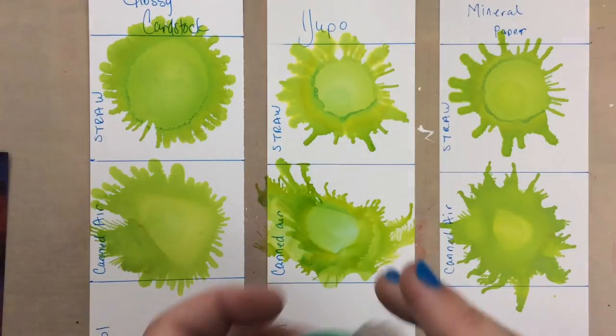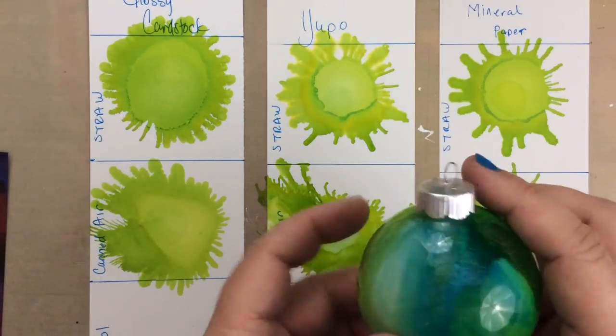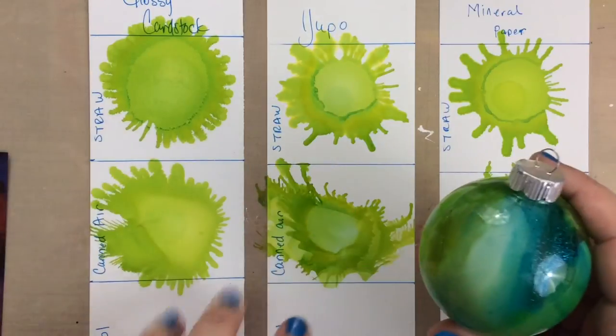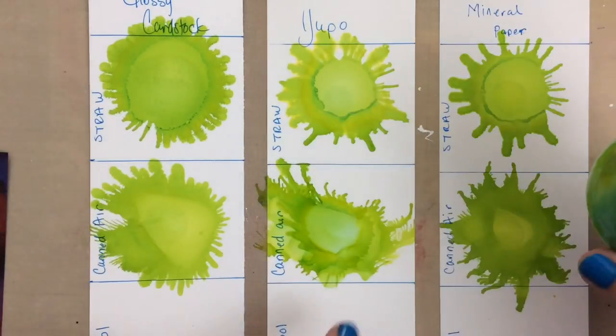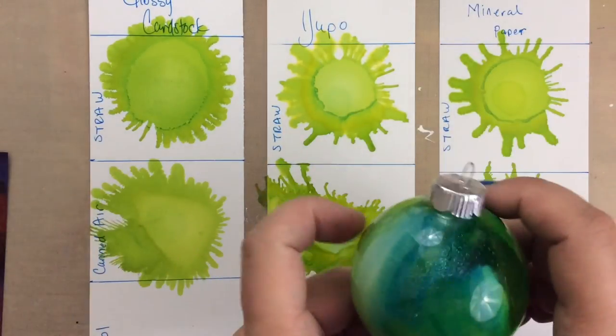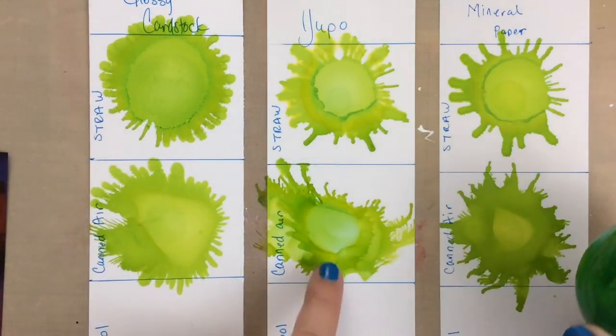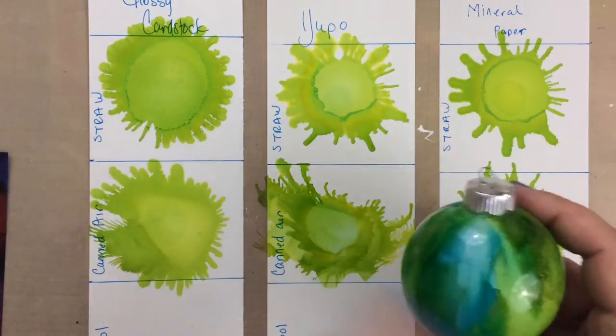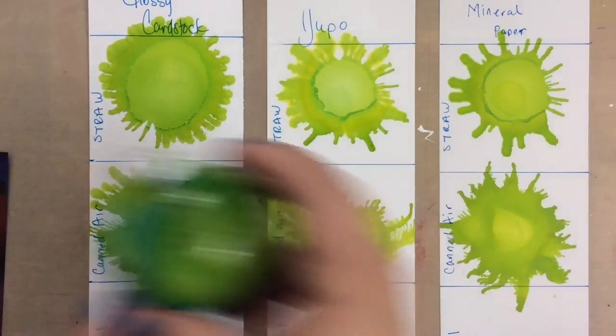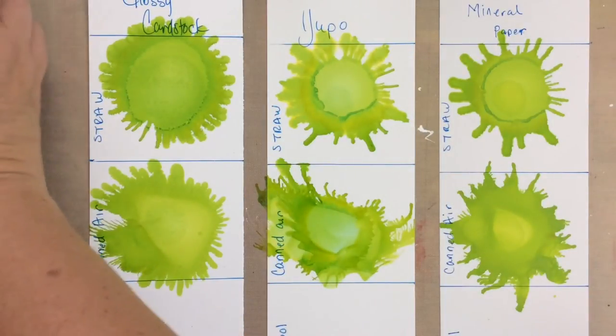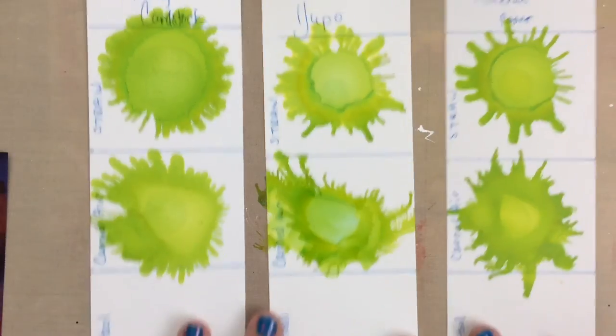And the way I usually use canned air is with ornaments, actually. I really don't usually use it on a flat surface. If I did, I would probably have a bigger sheet, but it could be a lot of fun to use on a flat surface, you get some interesting effects. But usually I use them on my ornaments, so that's how I use the canned air with the alcohol inks.